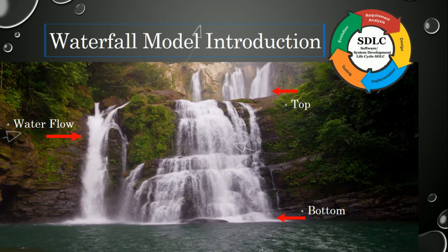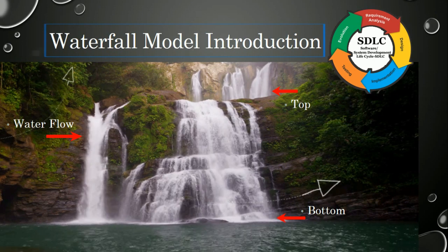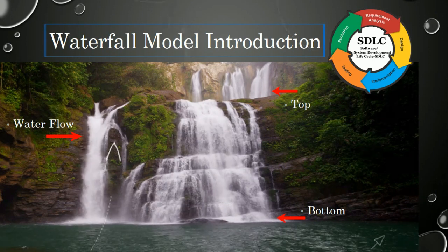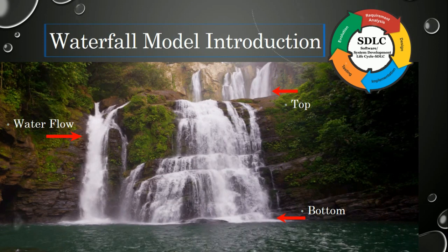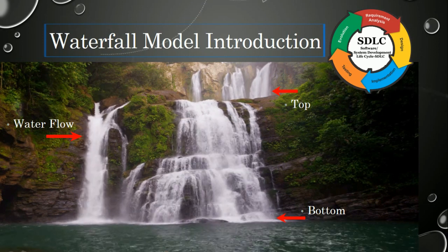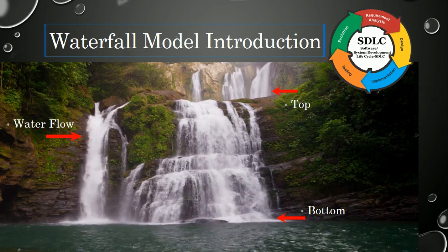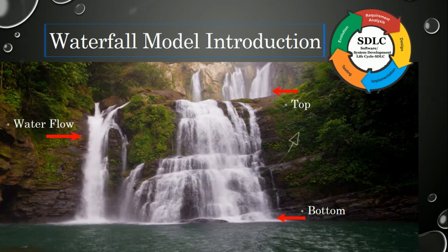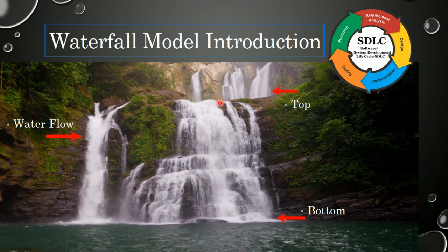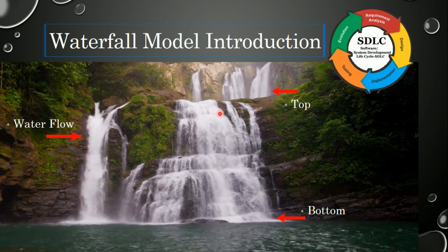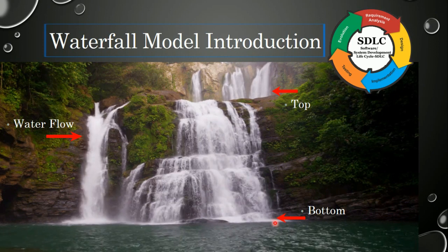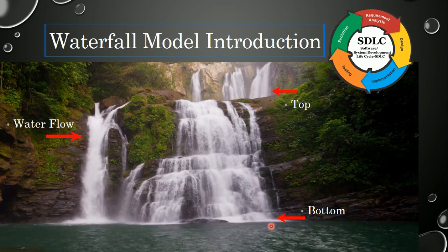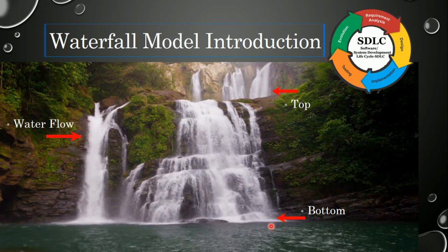Before going to know what is waterfall model, let's take a look here. This is the waterfall where water flows from top to bottom. Here water comes and after passing these stages or the mountains it comes through, so we see that the water follows in a systematic way.